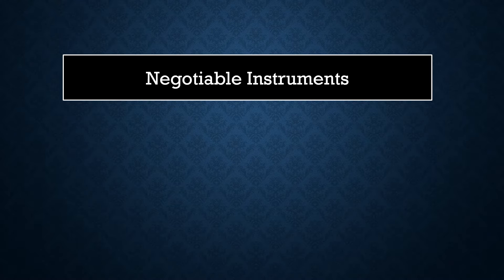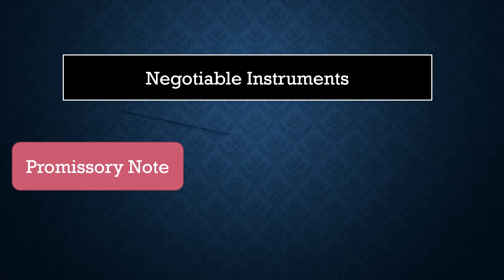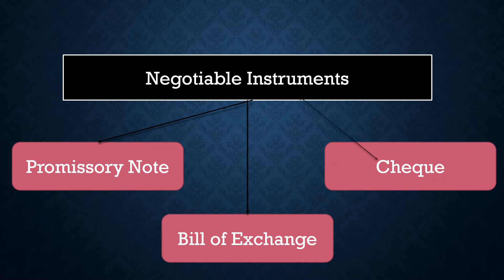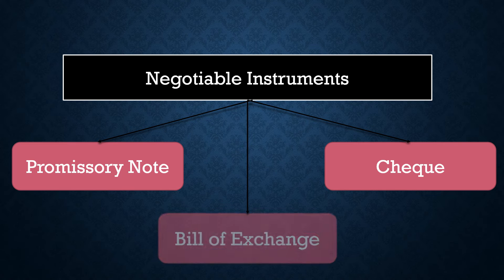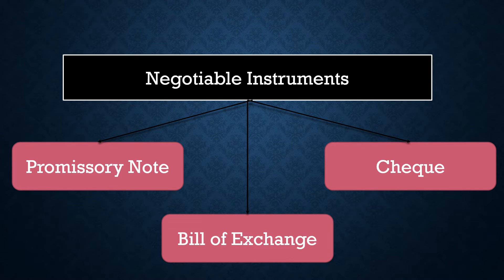Section 13 of the Negotiable Instruments Act highlighted three documents: promissory note, bill of exchange and cheque. I have already posted a video on promissory note — I will give the link in the description so you can see that video through that link. We will focus on bill of exchange now.